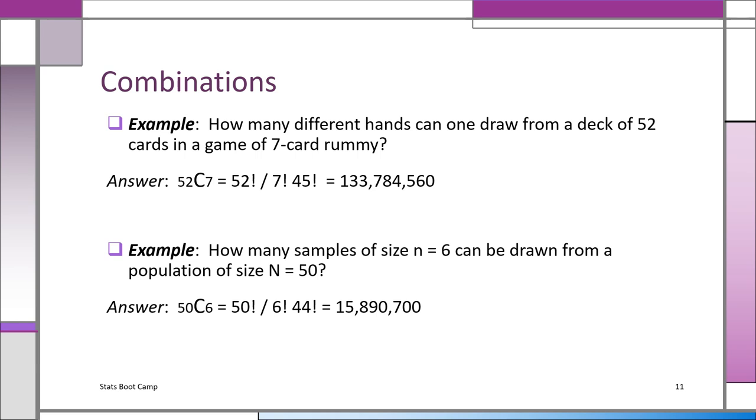Let's try the next example. How many samples of size six can be drawn from a population of size N equals 50? Well, this is simply 50 combination six, which is 50 factorial over six factorial times 44 factorial. Using your calculator, you'll get the answer of 15,890,700. It's very simple. Once you learn how to use your calculator, you have no problem. The biggest problem you'll have is deciding, is it a permutation or a combination? And that's easy to figure out. Do we care about the arrangement or not?